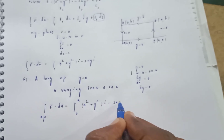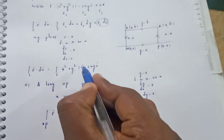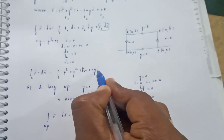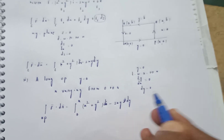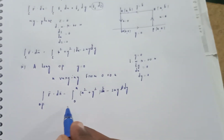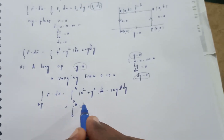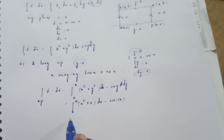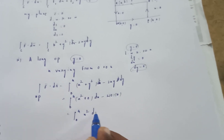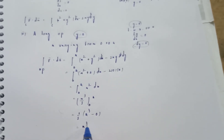So along OP, the integral becomes ∫₀ᵃ x²·dx = [x³/3]₀ᵃ = a³/3 - 0 = a³/3.